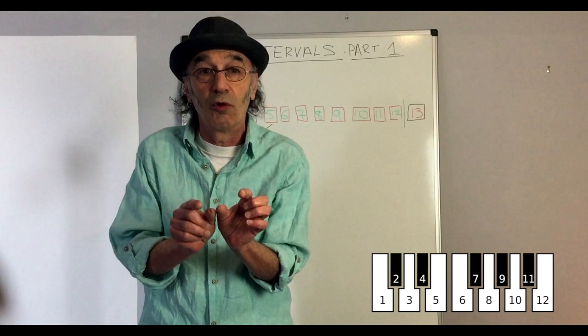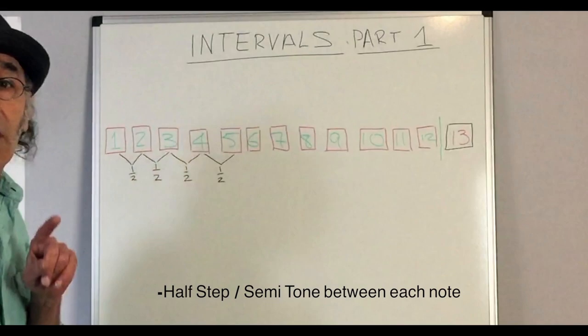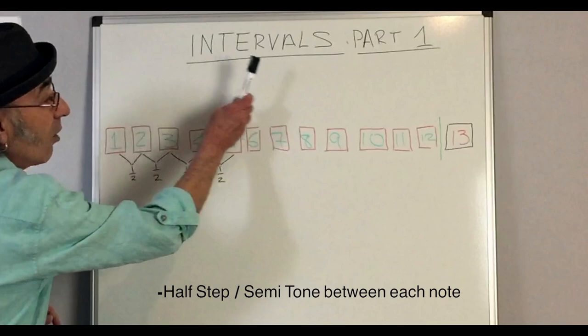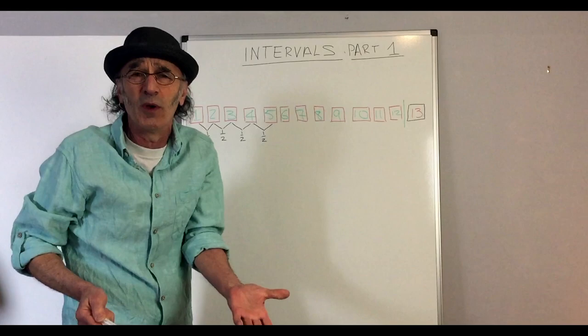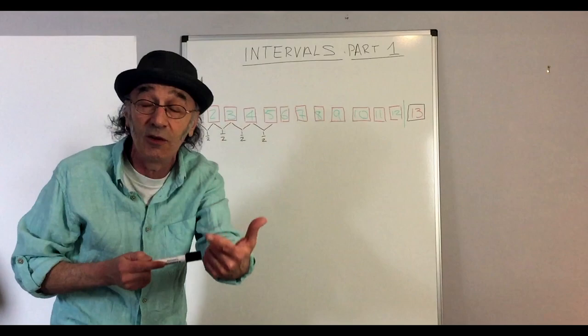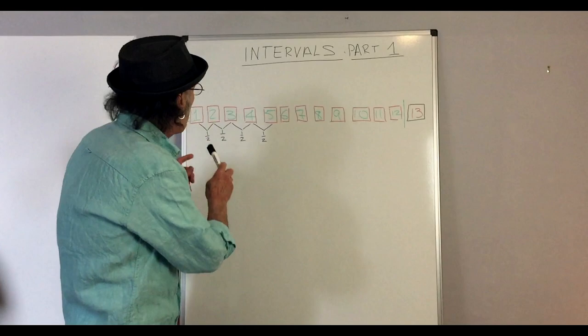There are 12 notes and there's a half step or a semitone between each note. That's all you need to remember for now. Once you get past the 12th note, you come to number 13. This is the first note again, what we call an octave, which is a strange word because octave means eight. And how can we have the number eight when we have 12 notes and 13 becomes eight? Yes, and I'm being confusing on purpose because it's really crazy.